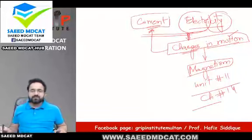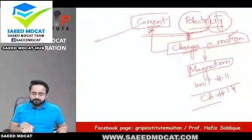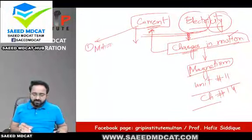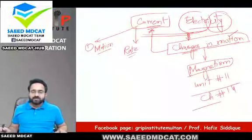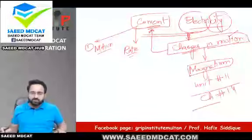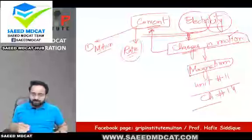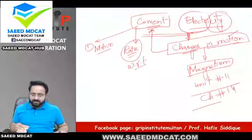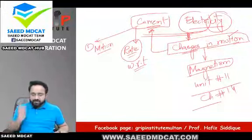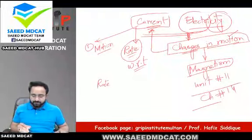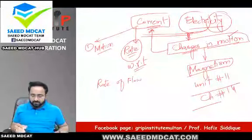Current — kya sirf motion ka naam hai? No. Ek toh motion ki baat kar sakti hai, and that is rate ki baat karte hain. How fast — kitni speed se charges move kar rahi hain with respect to time. Yaani, jab bhi rate ka lafz aata hai, iska matlab hai with respect to time. So current is rate of flow of charges.